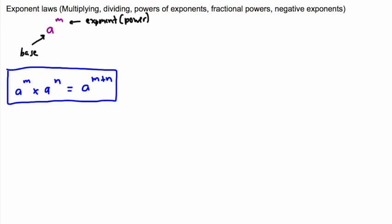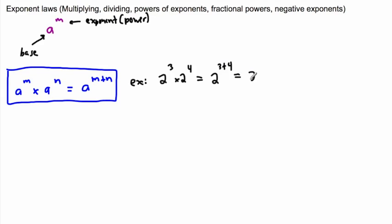Let's do an example. We have two to the power of three times two to the power of four. Instead of calculating each separately — eight times sixteen — we can use this rule. Because we're multiplying two expressions with the same base, we get two to the power of three plus four, which is two to the power of seven. That's the same thing.